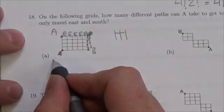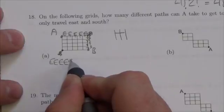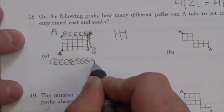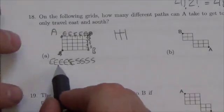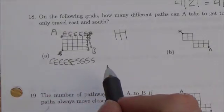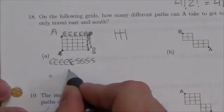This is like laying out the letters of a word: east, east, east, east, east, south, south, south, south. This is like having a word that has nine letters in it, five of which are going east, four of which are going south. So how many ways can I permute that? Unique permutations.